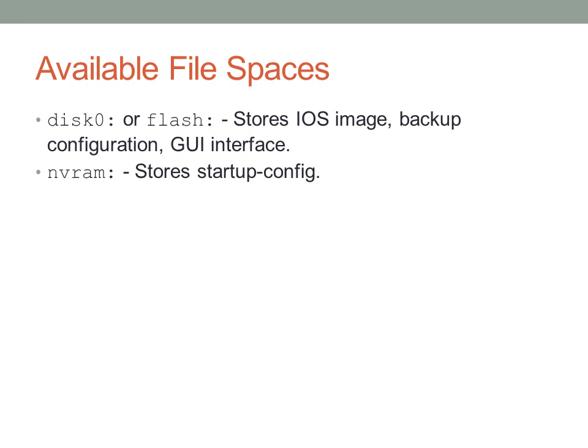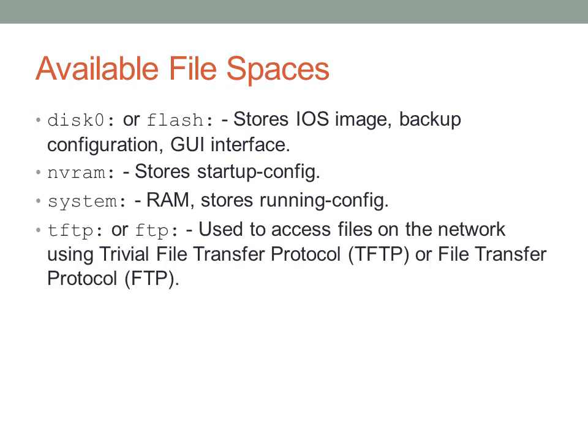NVRAM is typically where the startup config is stored in routers, and is referred to as 'nvram:'. 'System:' typically refers to RAM and is usually used only for the running configuration. You can also refer to file systems not on the device — for example, if you have a TFTP server or FTP server you'd like to access from the switch, you can type 'tftp:' or 'ftp:' and the device will go out to those servers and pull files.